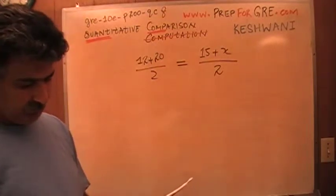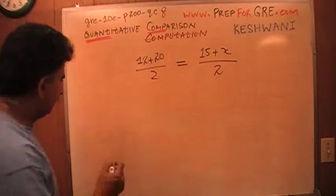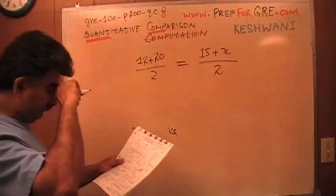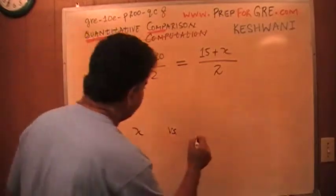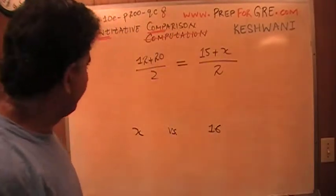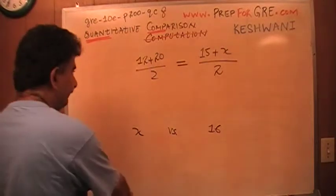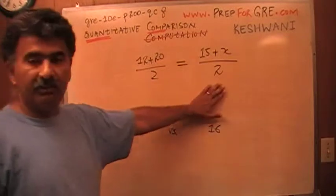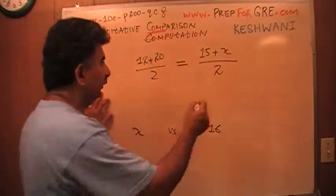And then we are asked to compare X versus 16. Let's see what we can do. The first thing you have to realize is that since this quantity is being divided by 2 and this quantity is being divided by 2, this 2 plays no role in it.